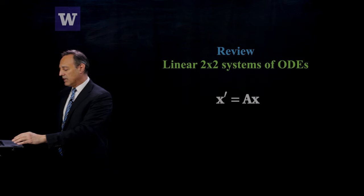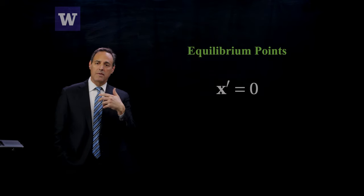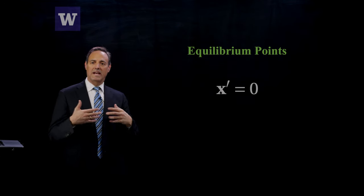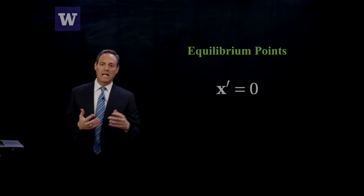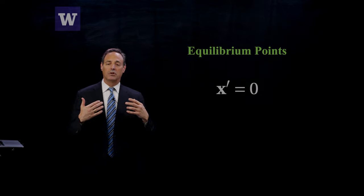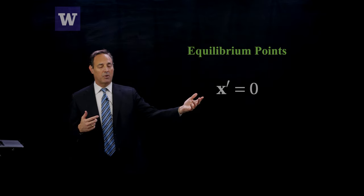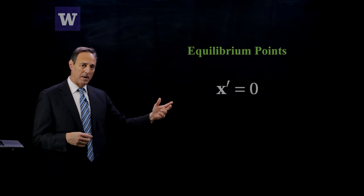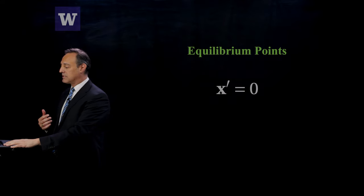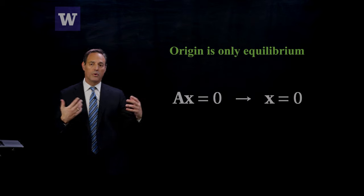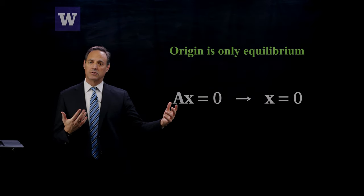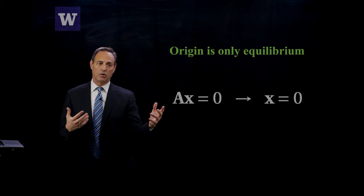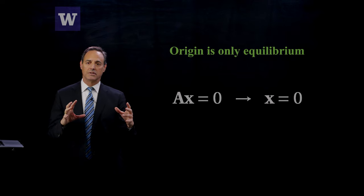We're going to look at what are called the equilibrium points — when does x prime equal zero? When x prime is equal to zero, nothing's happening, nothing's changing in time. This is very much like looking for derivatives being equal to zero, which are min and max. x prime equals zero are often called the equilibrium points, where the dynamics is not changing. For linear systems, there's only one spot this happens, and that is at the origin: putting x prime equals zero means Ax equals zero, so x equals zero, assuming A is non-singular.